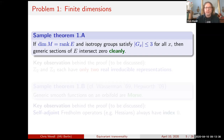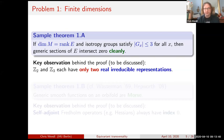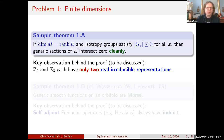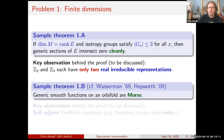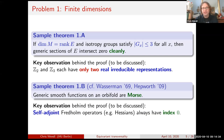One key observation behind the proof: the reason for the condition that isotropy groups have order at most three is that groups of order up to three have the nice property that they only have two real irreducible representations. That's basically the fact we're going to use in the proof. Second sample theorem — I found a reference in an old paper by Wasserman, and more recently Hepworth proves precisely this statement by a different argument: generic smooth functions on an orbifold satisfy the Morse condition — critical points are not degenerate in spite of the symmetry. So that's the situation where you actually do get equivariant transversality.